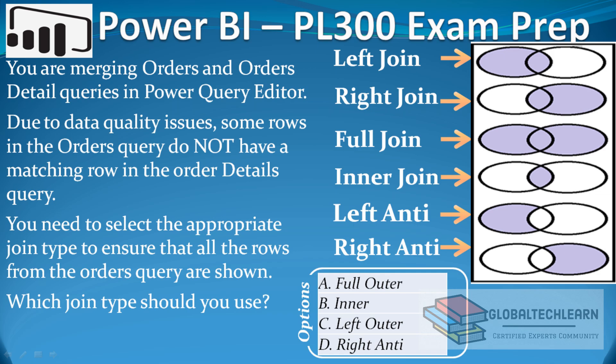The next join type is Left Anti-Join, where we have only the unmatched data from the left table. All matched data and all data from the right table will be ignored. Opposite to this is the Right Anti-Join, where we have all the unmatched data from the right table, and all matched data and all data from the left table will be ignored. If you want to learn all these join types in detail, I will provide a video link where all the joins have been explained thoroughly.